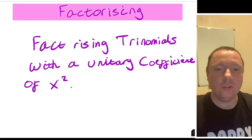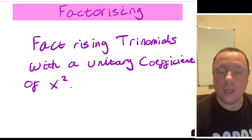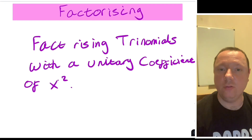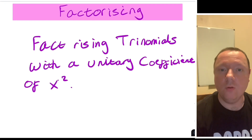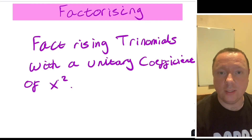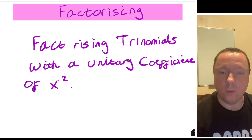Mr Claren here from Claren Maths. Today we're going to be looking at factorising trinomials — specifically factorising trinomials with a unit coefficient of x squared. That means the number in front of x squared will just be 1. These are the simplest types of examples to start with, and in a later video we'll do ones where the number in front of x squared is bigger than 1. Let's get straight into it.